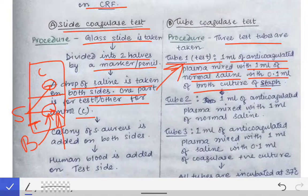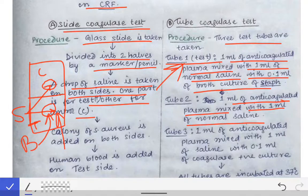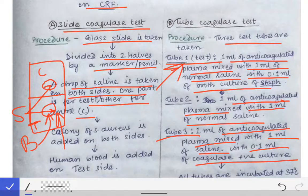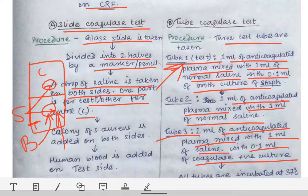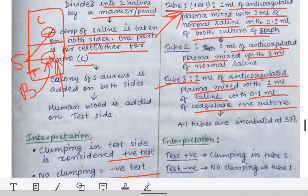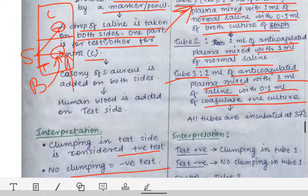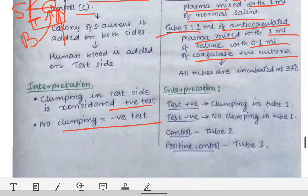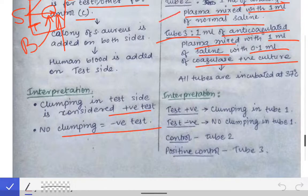Tube two contains one ml of anti-coagulated plasma mixed with one ml of normal saline only — this is the normal control. Tube three contains one ml of anti-coagulated plasma mixed with one ml of saline plus 0.1 ml of a coagulase-positive culture — this is the positive control.